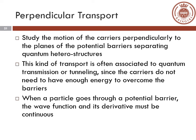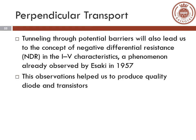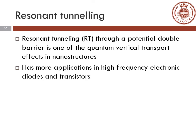Next we will focus on the concept of perpendicular transport, which is the study of the motion of carriers perpendicularly to the planes of potential barriers separating the quantum heterostructures. This kind of transport is often associated with quantum transmission or tunneling because carriers may not have enough energy to overcome these barriers. When a particle goes through a potential barrier, the wave function and its derivative must be continuous. Tunneling through potential barriers also leads to the concept of negative differential resistance in the current-against-voltage characteristics. This phenomenon was already observed by Esaki in 1957, and these observations helped produce Esaki diodes and transistors. Resonant tunneling through a potential double barrier is one of the key quantum vertical transport effects in nanostructures, with applications in high-frequency electronic diodes and transistors.